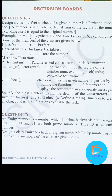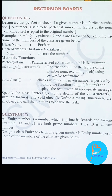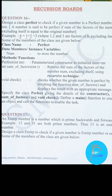Hello class, today we are at the last problem of the recursion board street. We were having five problems in this series and we have tried all the previous programs. Today we are at the final program, so let's go through the problem first, then we will talk about the solution. An EMIRP number is a number which is prime backward and forward. Example: 13 and 31, both are prime numbers, thus 13 is an EMIRP number. Design a class EMIRP to check if a given number is an EMIRP number or not.